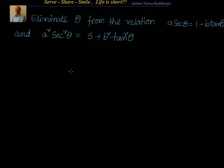Hello friends, welcome. As part of trigonometry 10th grade, let's look at this example: eliminate theta from the relationships a secant theta equal to 1 minus b tan theta, and a square secant square theta equal to 5 plus b square tan square theta. We have been given two relations between secant theta and tan theta, and we have to eliminate theta. Eliminating theta means the solution should not have anything related to theta — only a and b.